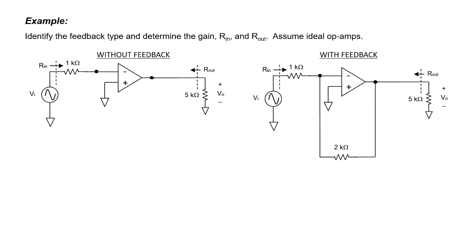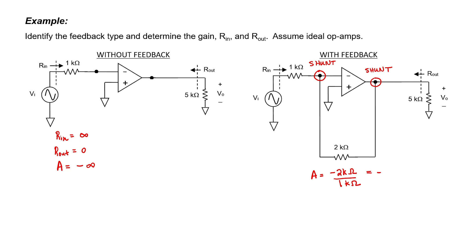In the first example, I would like to identify the feedback type and determine the gain and input and output impedances both without and with feedback. We're going to assume ideal op-amps. From inspection, we have the shunt-shunt configuration. The input impedance of an ideal op-amp is infinite, therefore the input impedance here is infinity. The output impedance of an ideal op-amp is zero, therefore the output impedance is zero. The gain of this amplifier is negative infinity because it's in the inverting configuration with no feedback path to stabilize the gain. With feedback, the configuration is a standard inverting op-amp, and the gain is just given by the ratio of the two resistors — so the gain is negative two.